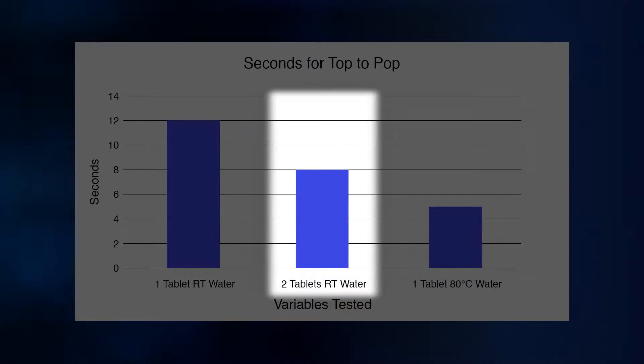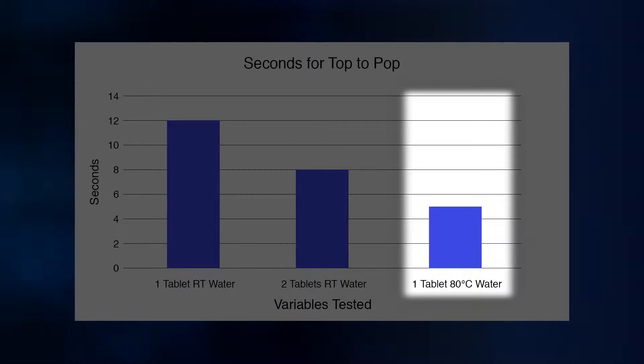Our other two reactions went faster. When we used two tablets of Alka-Zester, the top popped off in less than 8 seconds. And when we used hot water with only one tablet, it only took 5 seconds. We concluded that increasing the amount of reactant and the temperature both increased the rate of reaction, but temperature affects the rate more.